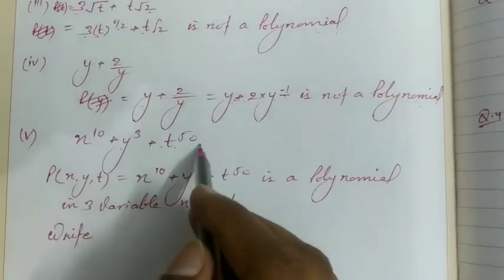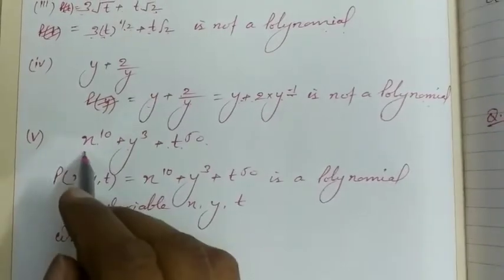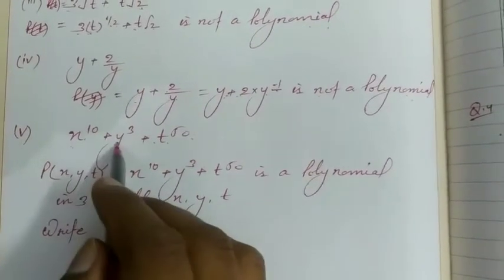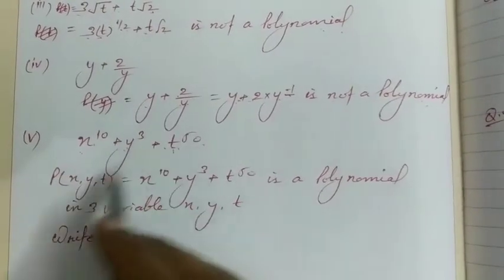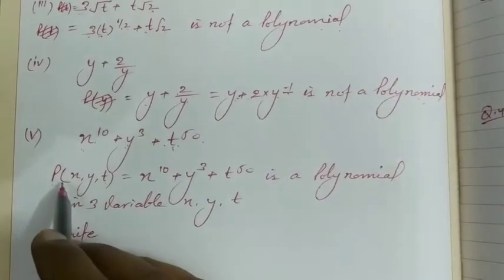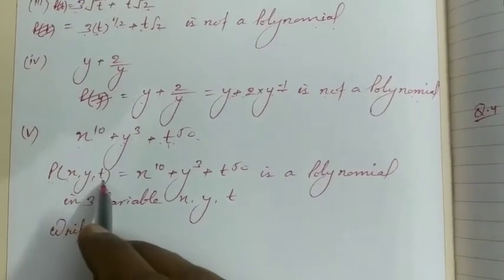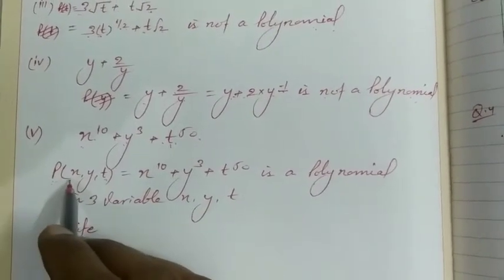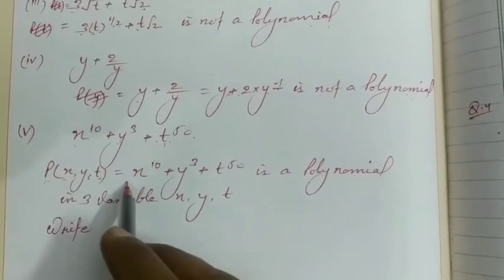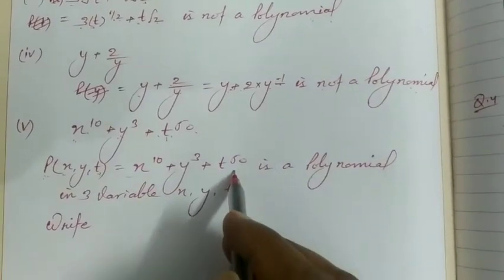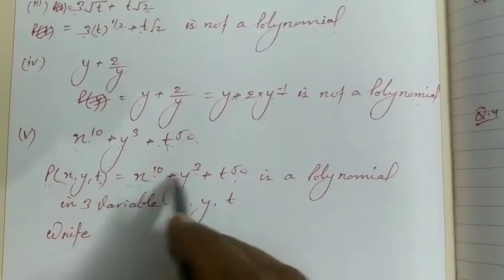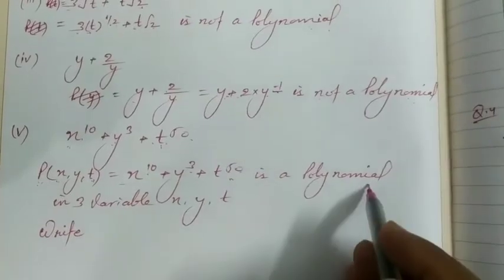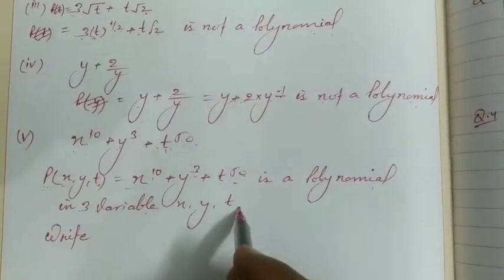Fifth part: x¹⁰ + y³ + t⁵⁰. Here there are three variables: x, y, and t. So this is a polynomial in three variables, represented as p(x, y, t). The powers of all variables are positive integers, so this is a polynomial — but in three variables x, y, and t.